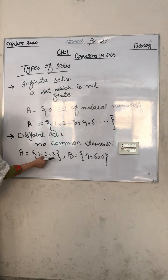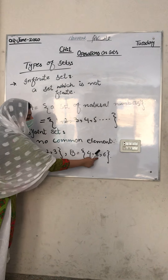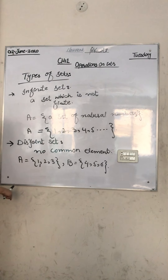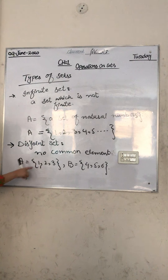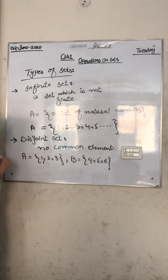In set A we have 1, 2, 3 and in set B we have 4, 5, 6. So this is a disjoint set because there is no common element between them.